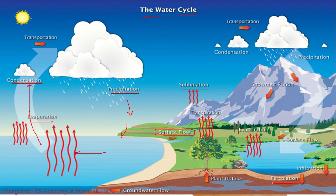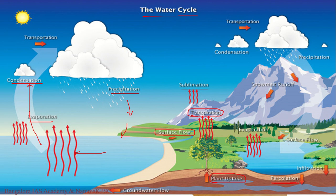If water percolates into the ground, water in the upper levels of the soil can be taken up by plant roots. Some amount of water will be used for metabolism and some may be lost to transpiration back to the atmosphere. When these plants are eaten by animals, water moves through the food chain and gets introduced into the food web or the ecological system itself.